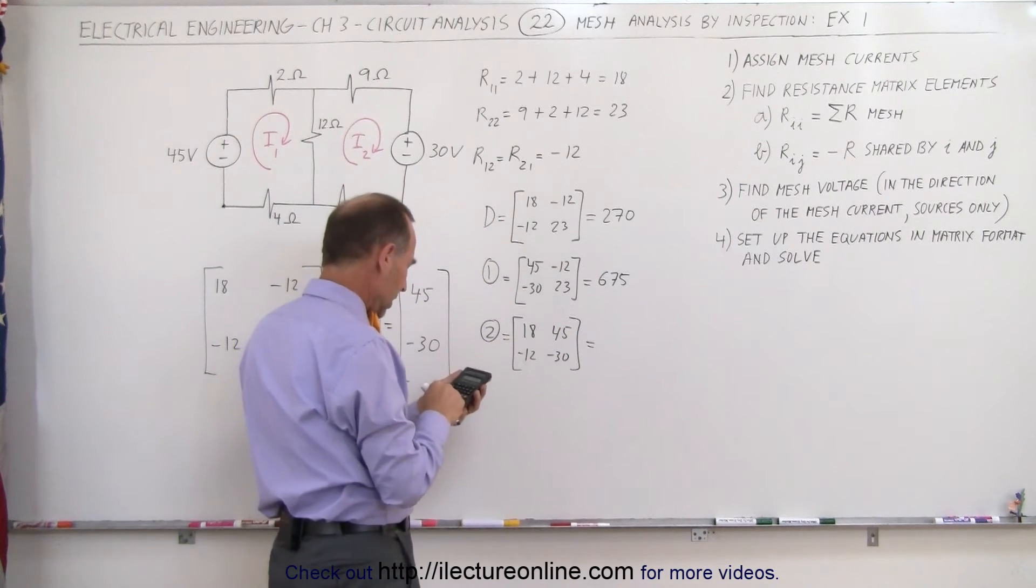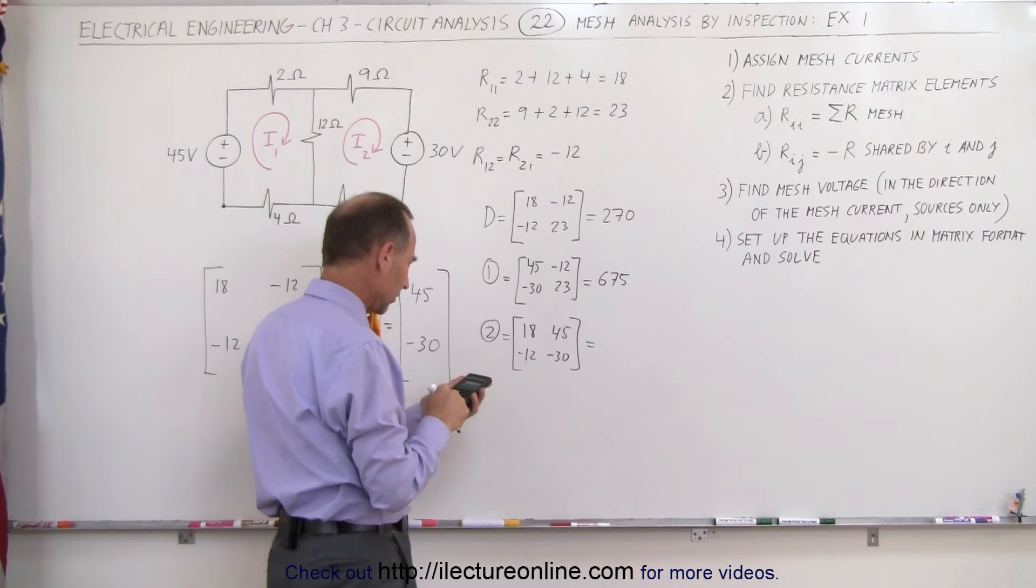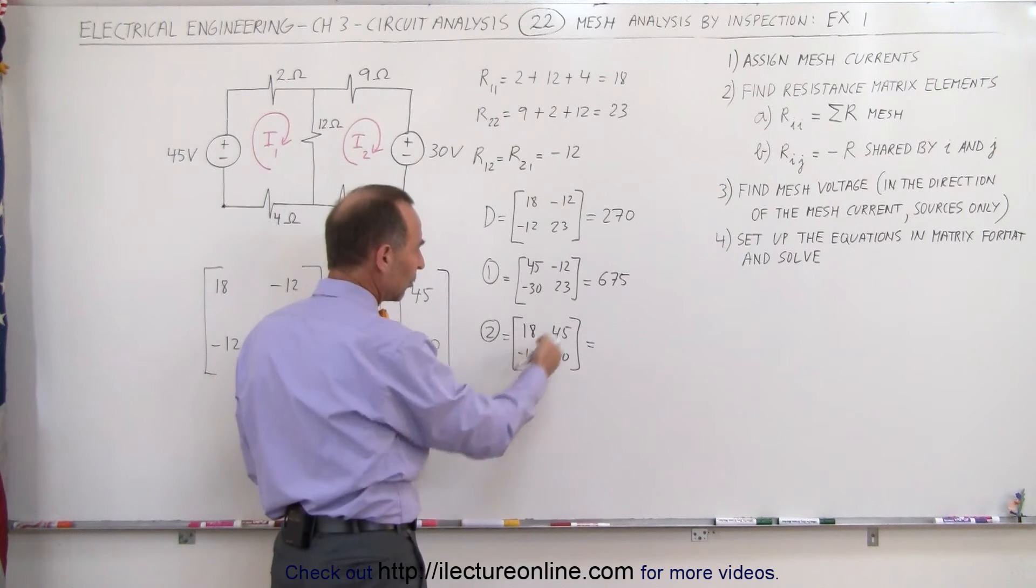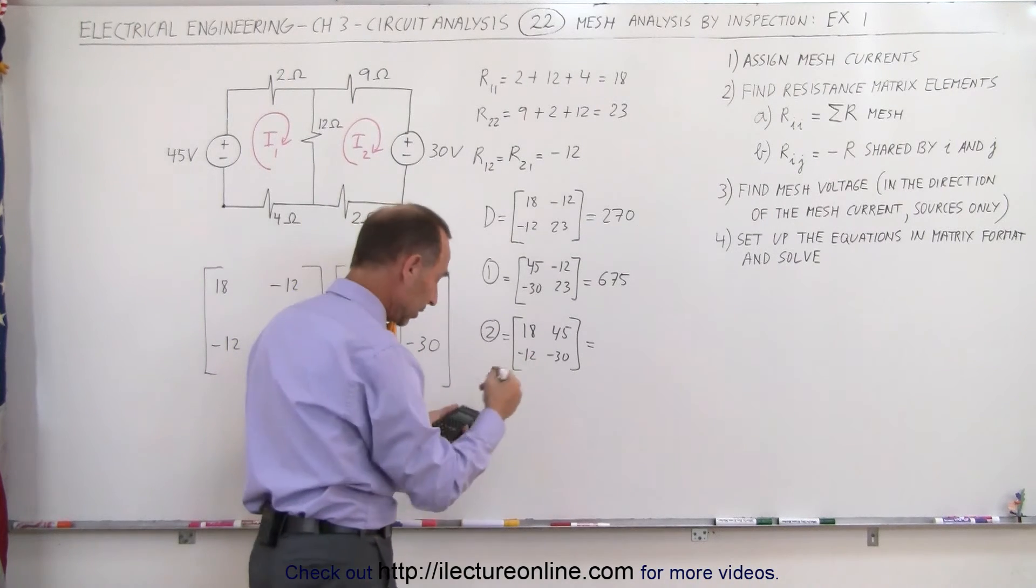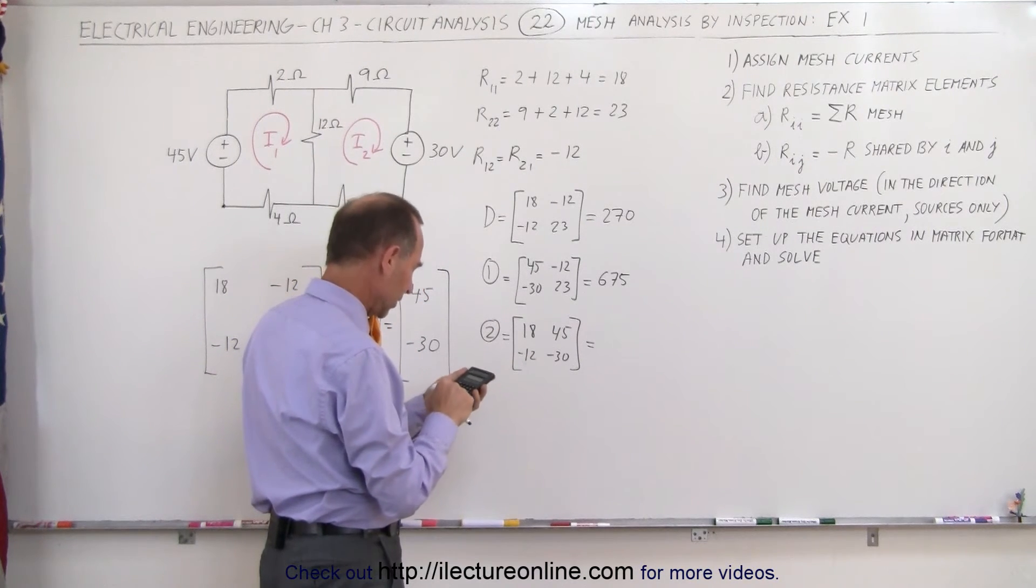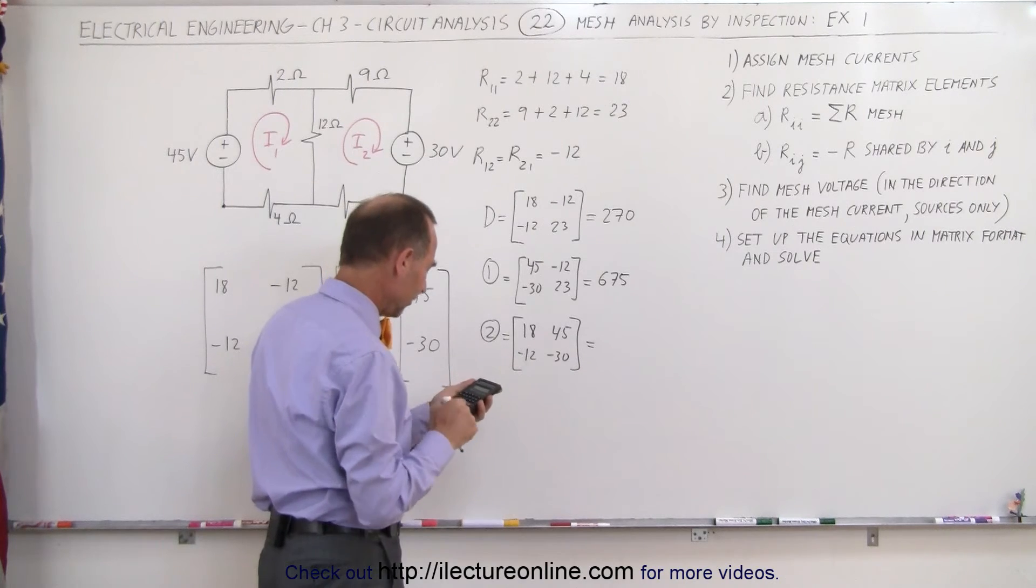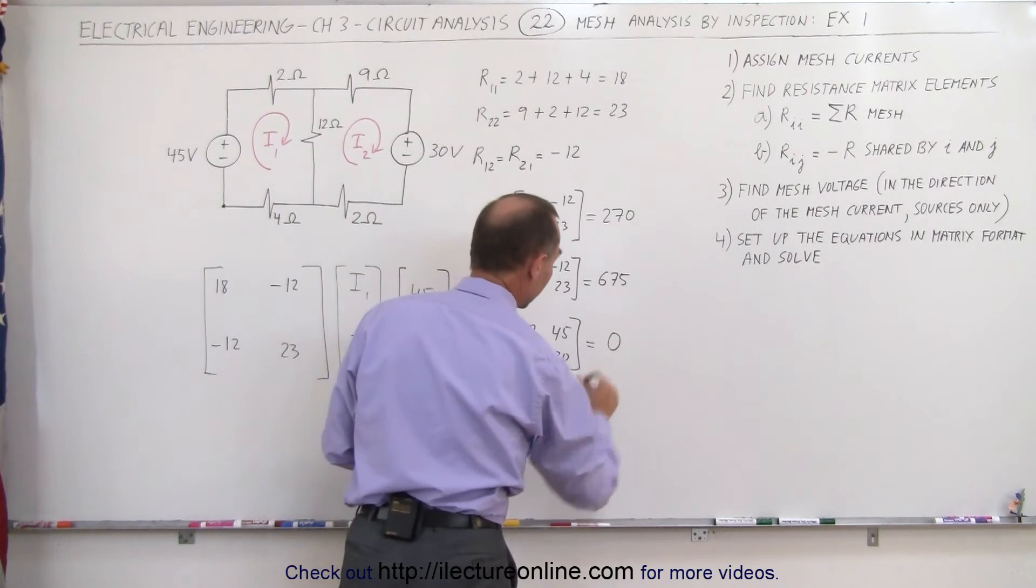Notice 18 times minus 30—18 times 30 that is minus 540—and then we subtract the product of these two. But since one of them is negative, that's like adding the two, so plus 12 times 45, and we get 0. So that's interesting.